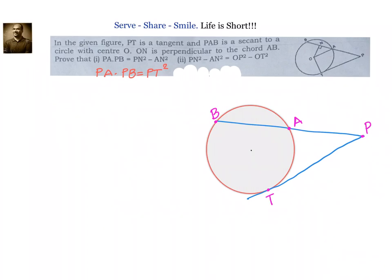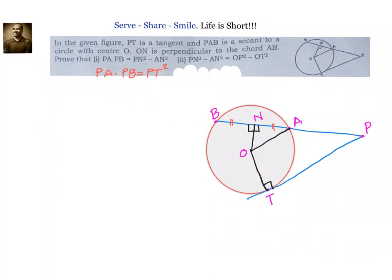Let's go ahead and do that. The center is O. We drop a perpendicular to the chord — that angle is 90 degrees. We join O to A, and we call the foot of the perpendicular N. We know that the perpendicular drawn from the center will bisect the chord, so AN equals BN.